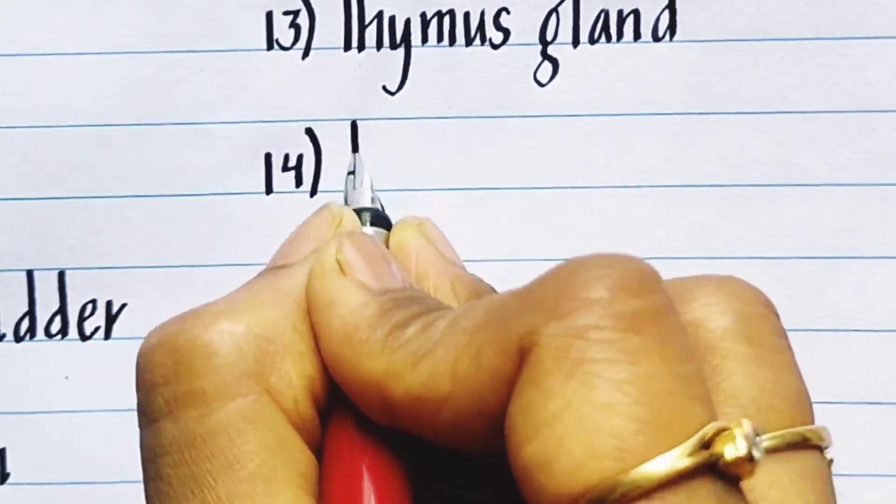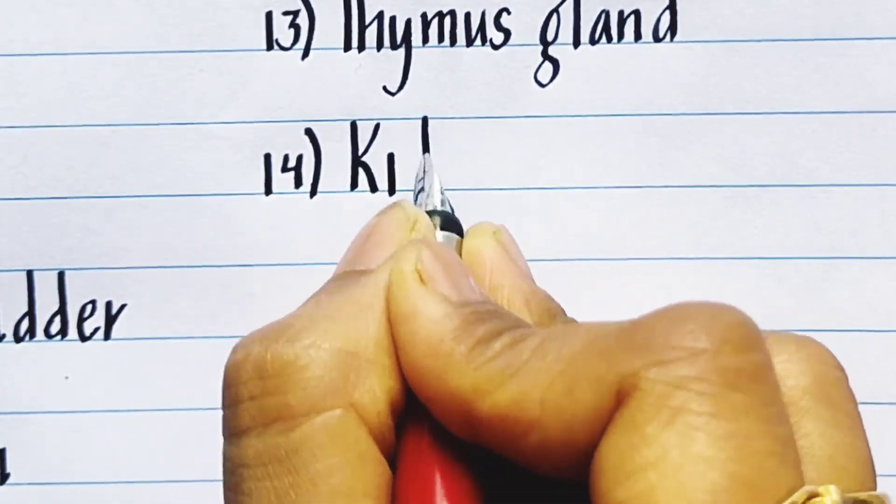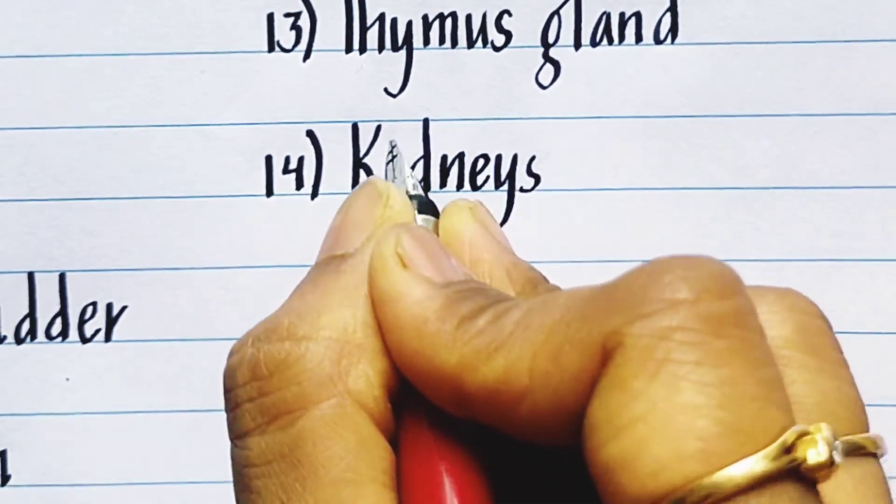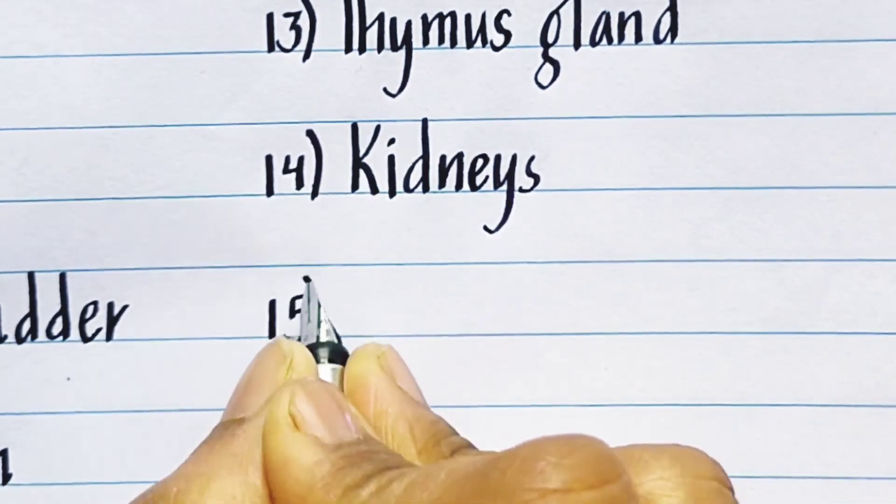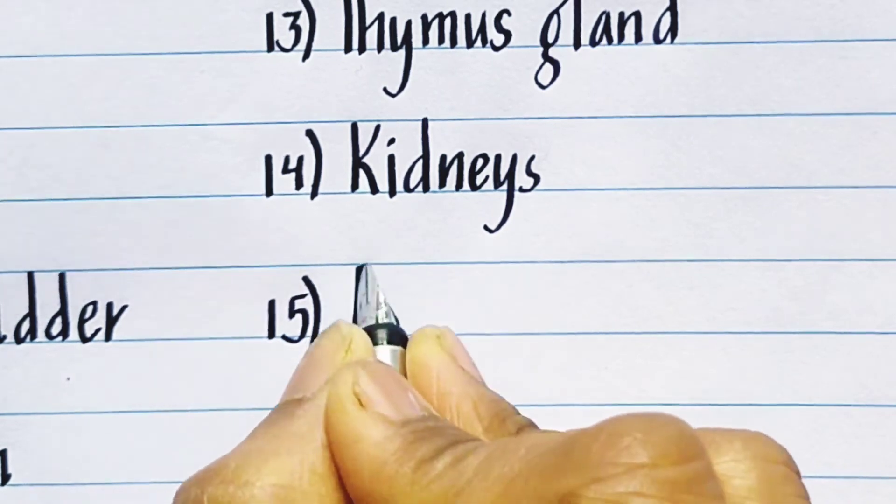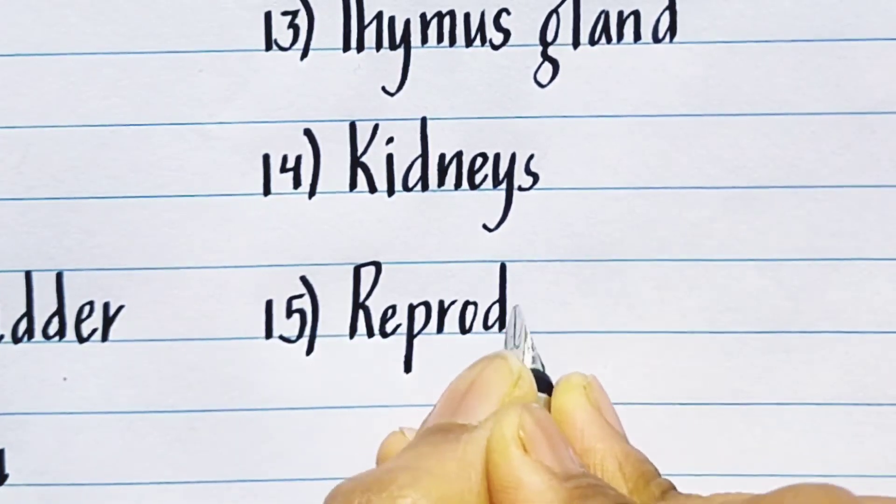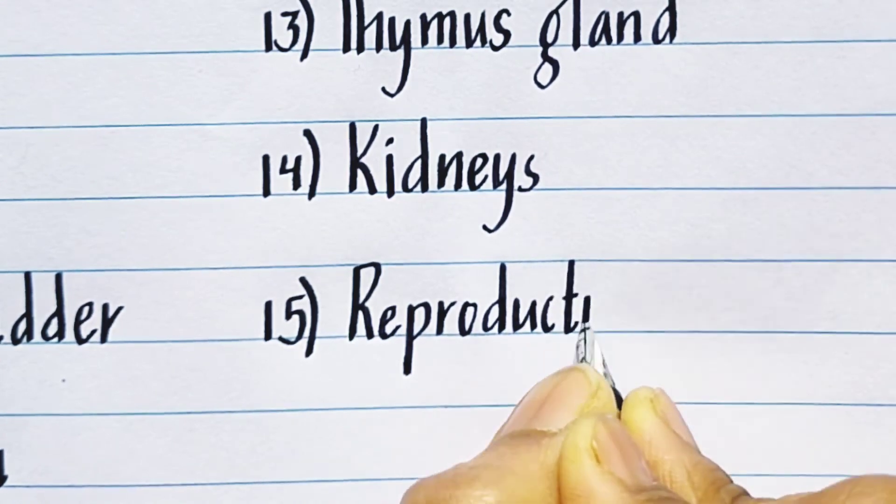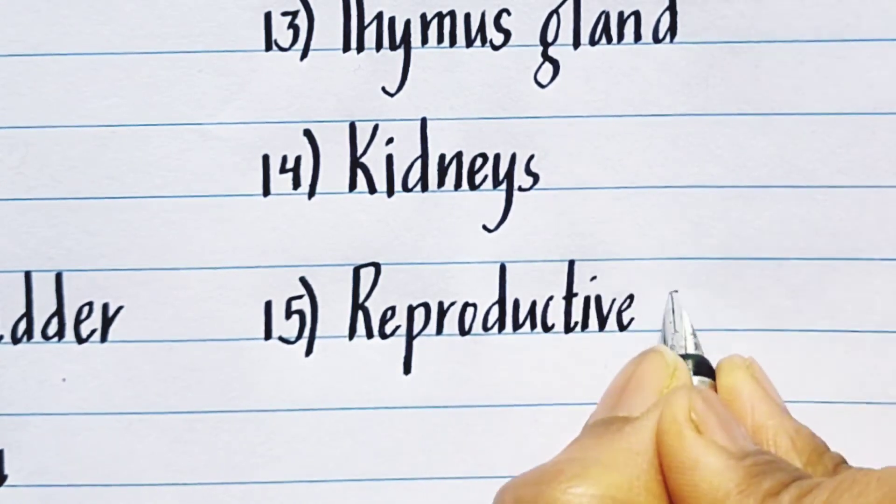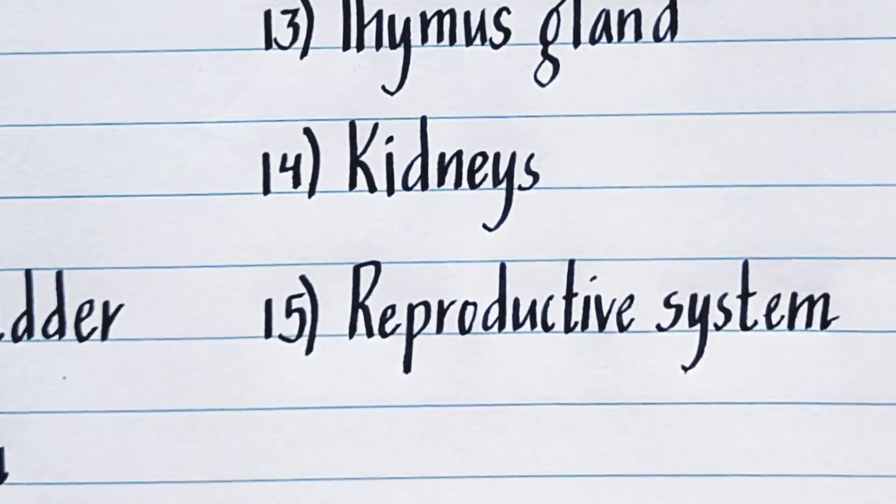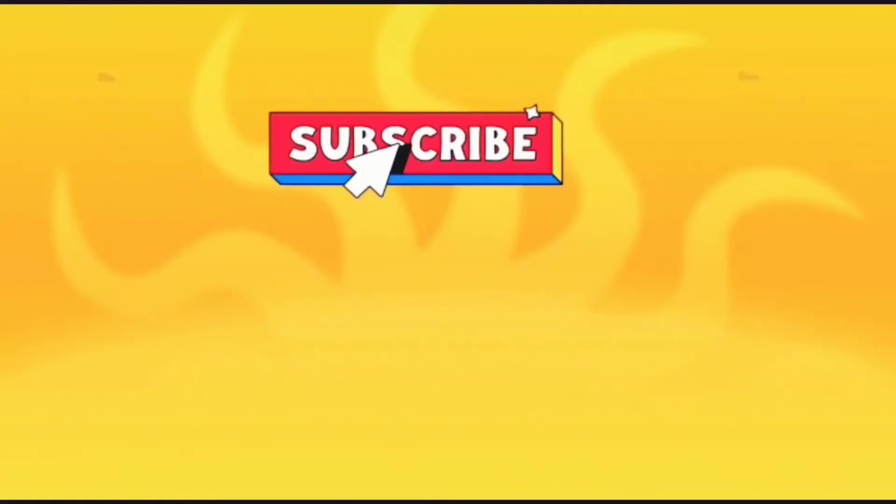Fourteenth one is kidneys, K-I-D-N-E-Y-S, kidneys. Fifteenth one is reproductive system, R-E-P-R-O-D-U-C-T-I-V-E, reproductive, S-Y-S-T-E-M, reproductive system. Could be male or female.